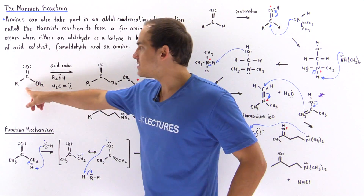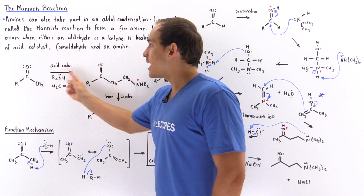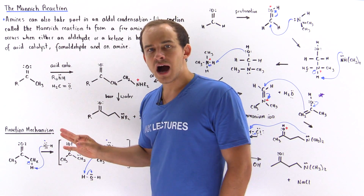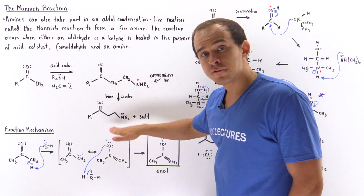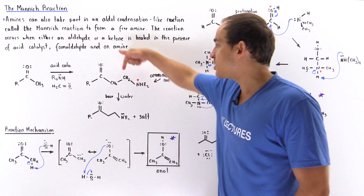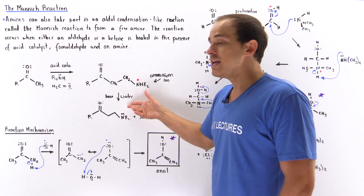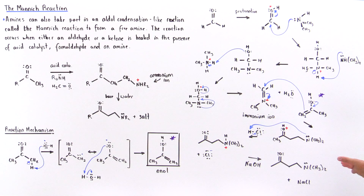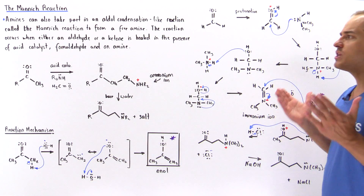The reaction takes place in the presence of either an aldehyde or a ketone. We mix this aldehyde or ketone with an acid catalyst, a secondary amine, and formaldehyde. We produce the ammonium ion, which is then transformed into the final free amine containing a carbonyl group attached to the nitrogen, by mixing a base in the presence of water. A salt is also formed, as we'll see in the reaction mechanism.